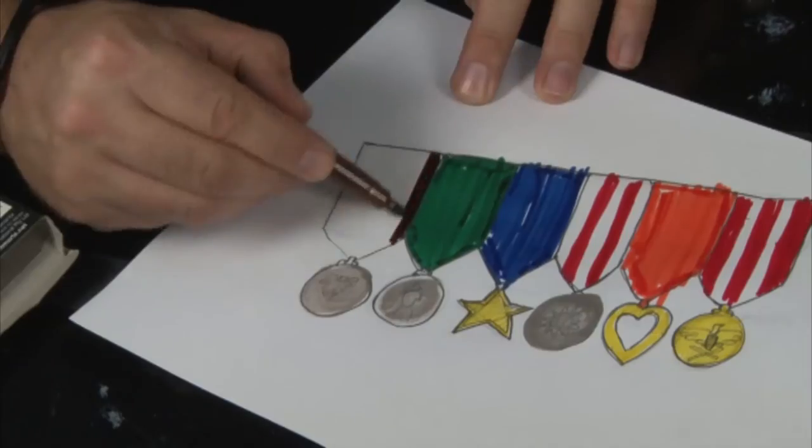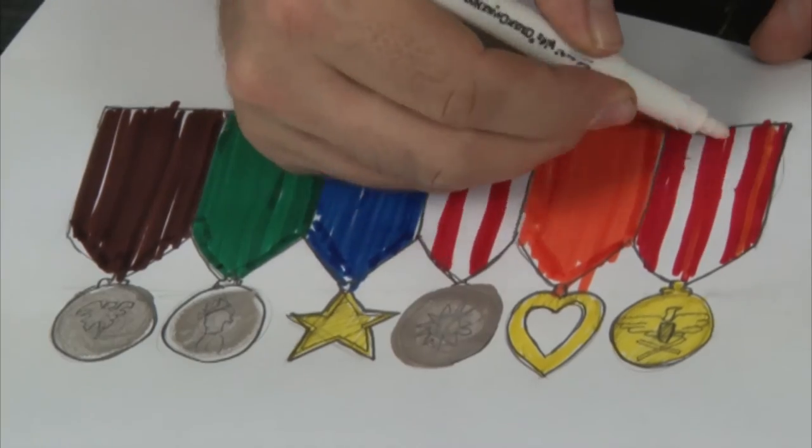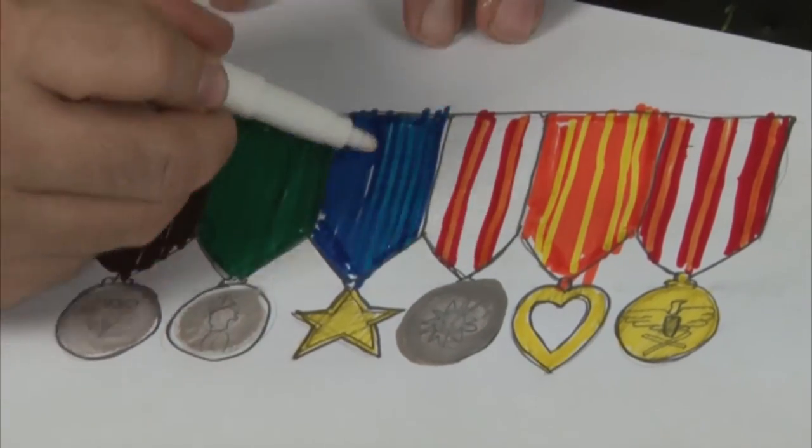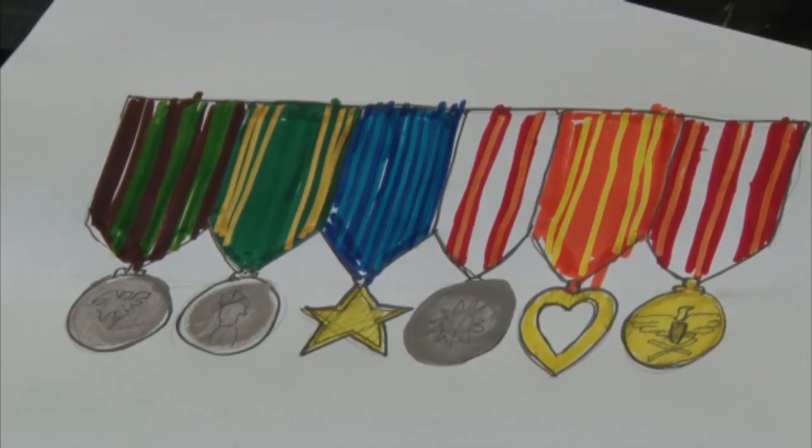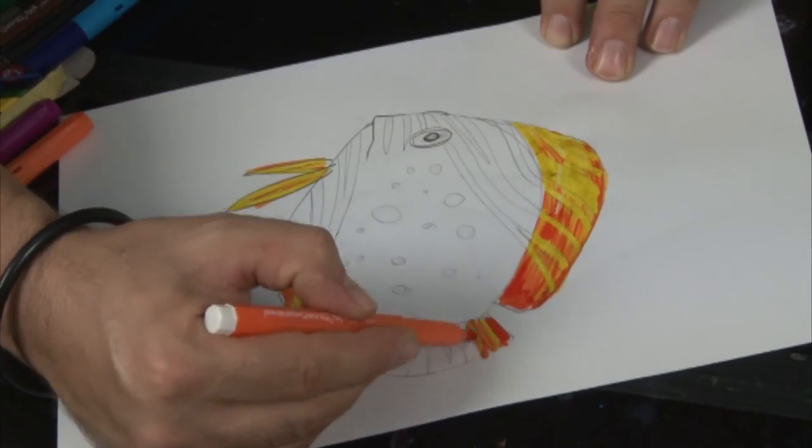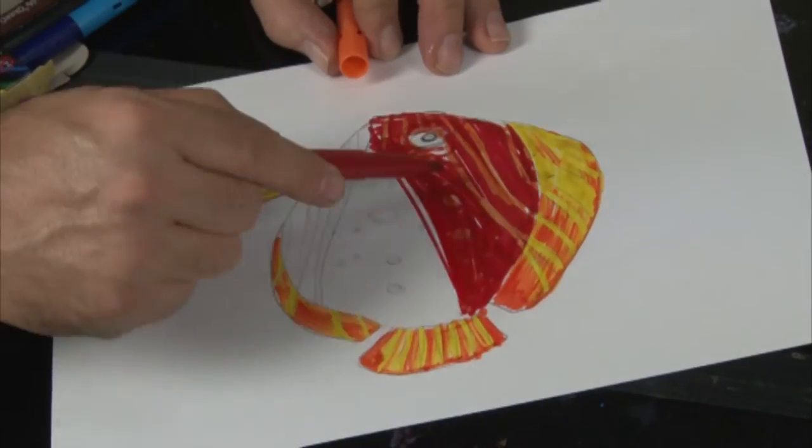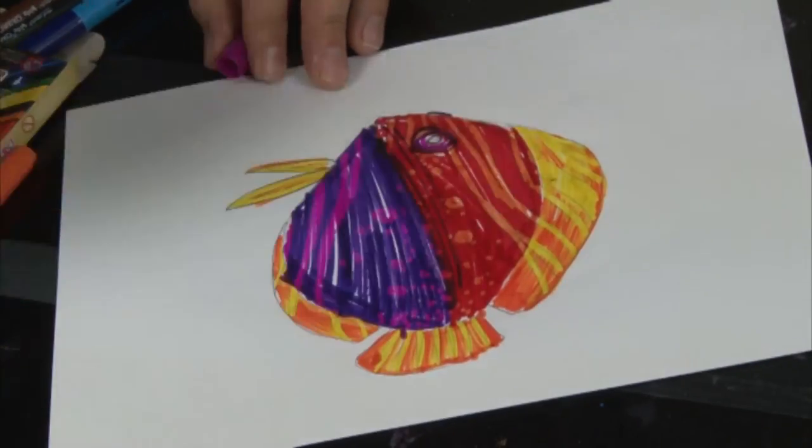The white pen can be used before the top colors are applied as well. The ink contained in Montmartre kids color change markers is water-based, non-toxic.